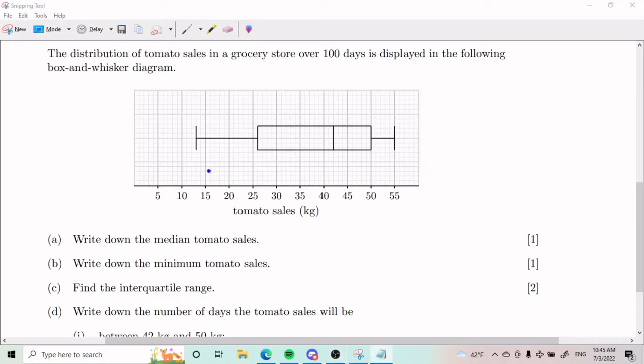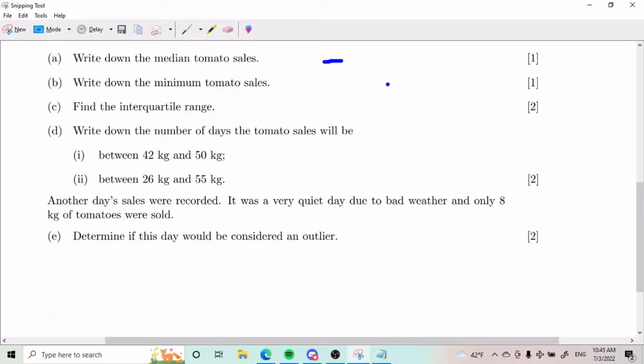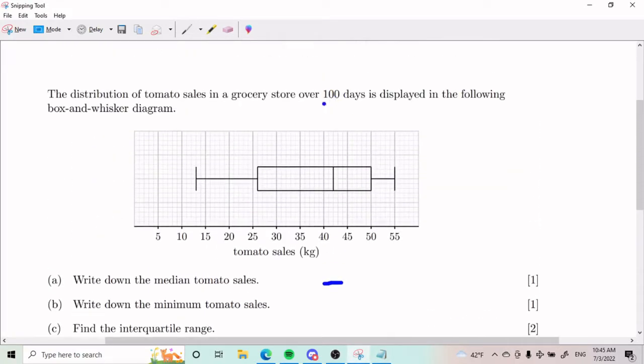Hello everybody. Today we will be going over a box and whisker plot at the math analysis and interpretations level. We have the distribution of tomato sales in a grocery store over 100 days. Important number. 100 days is displayed in the following box and whisker diagram.